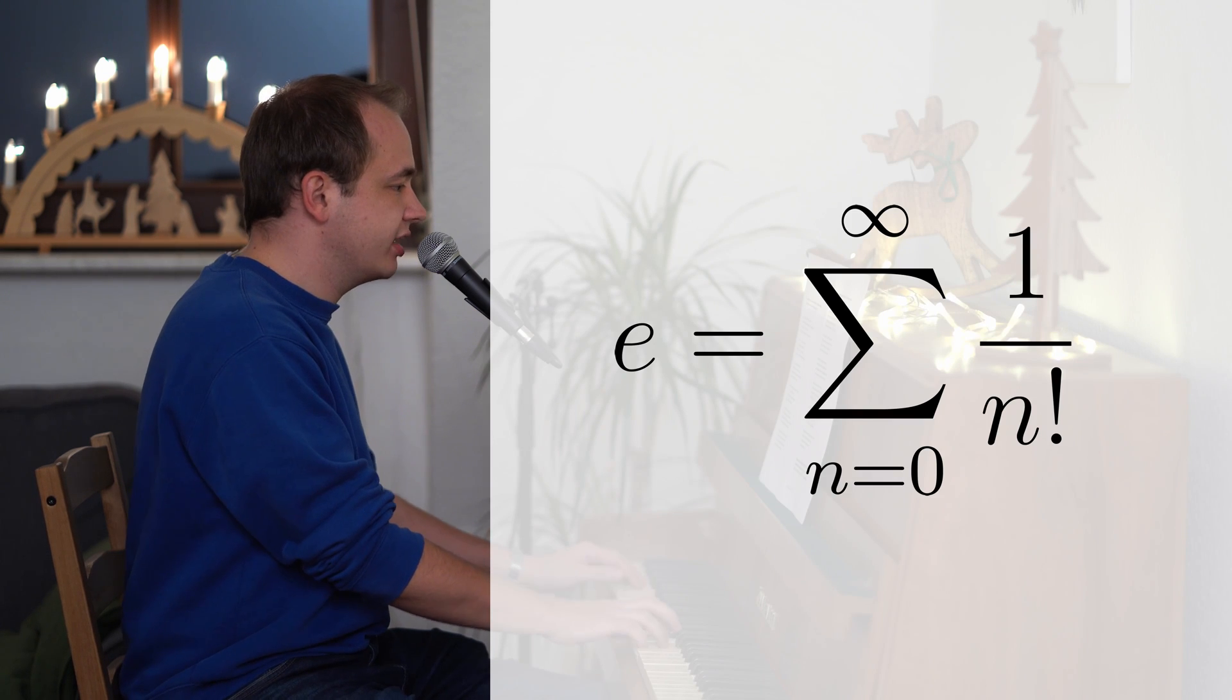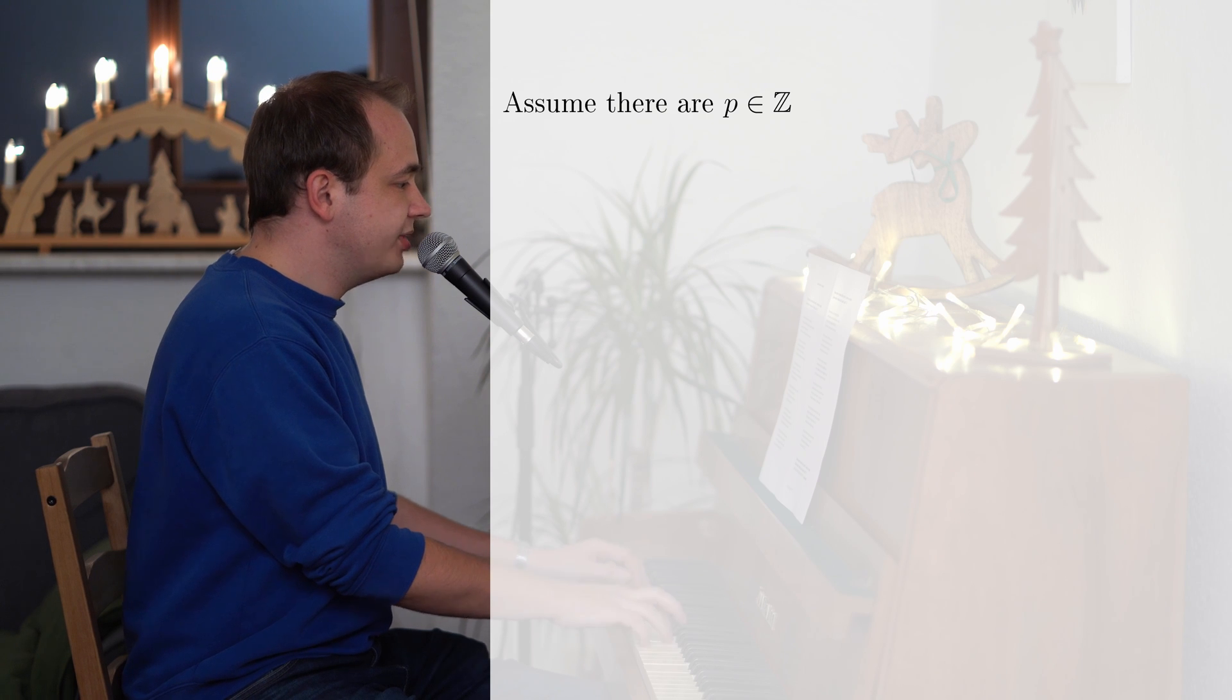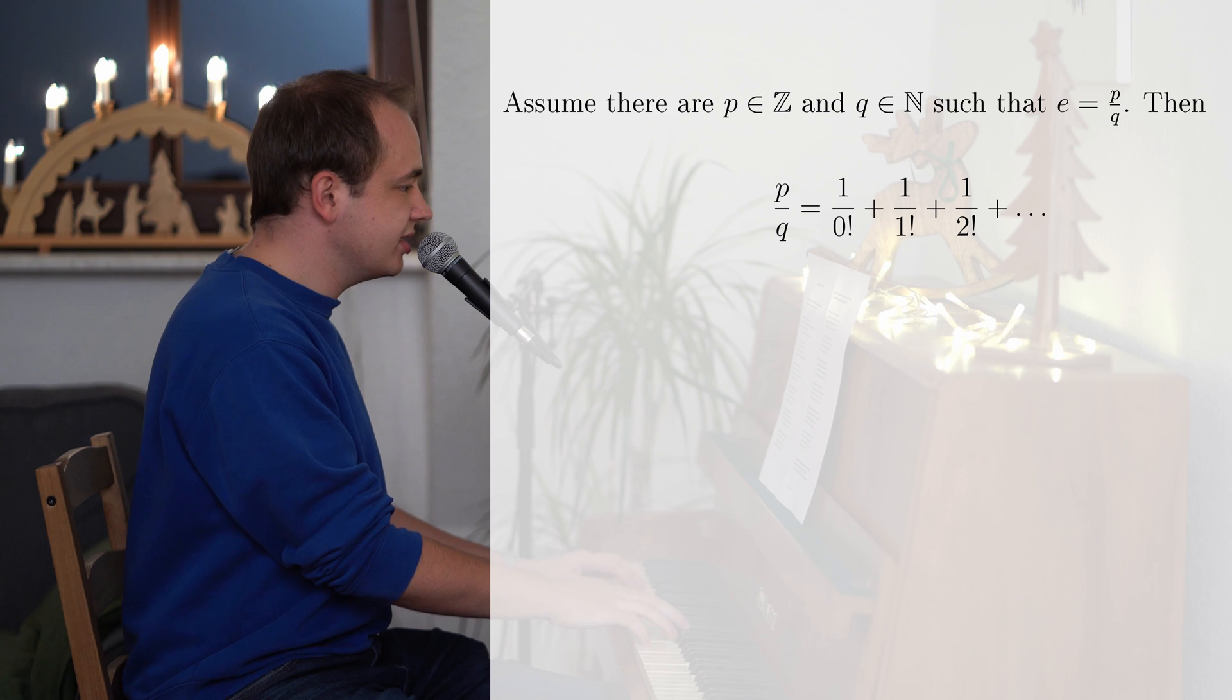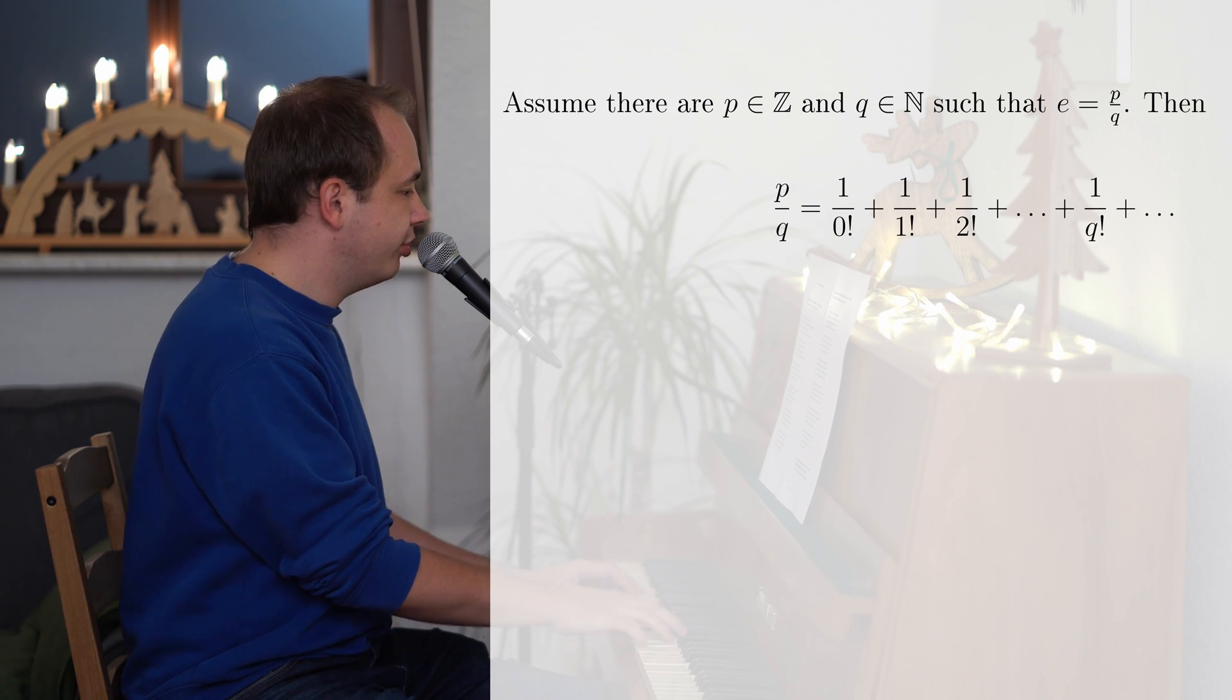This series 1 over n factorial will be our starting point as the definition of e, where n starts at 0 and goes to infinity. And now let us see what happens if there would be an integer p and a natural q such that e equals p over q. And since we've had all natural numbers in a series and not just a few, we must at some point find our q.